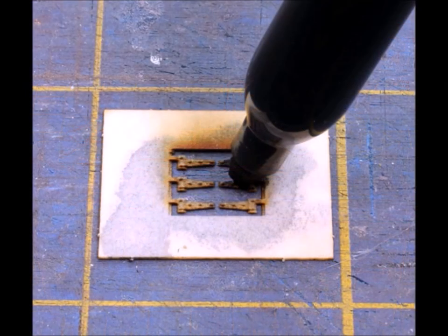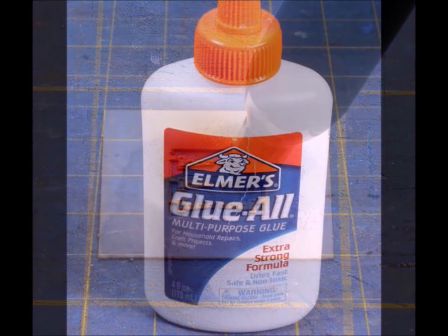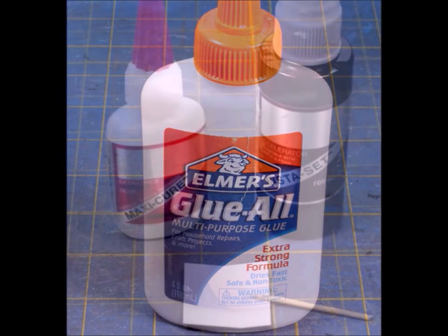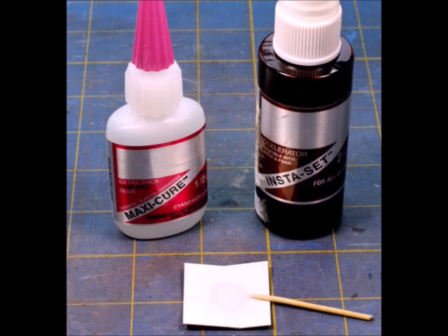One of the fun aspects of this kit is it has lots of little small parts that go all over the place. Now let's talk about glue for a second. I find that Elmer's is good for a lot of different things where I'm using paper or wood, and then for other objects I like to use the CA glue, the super glue.